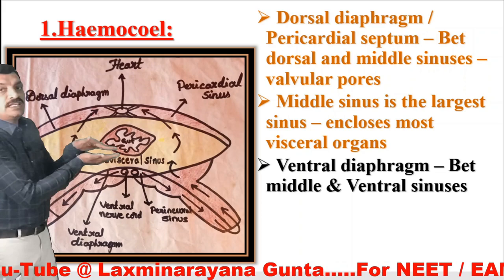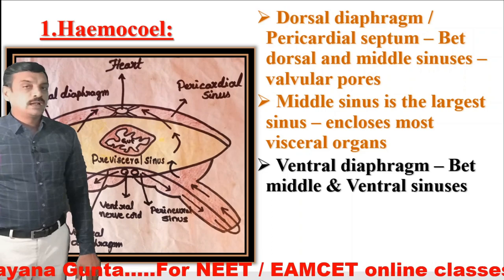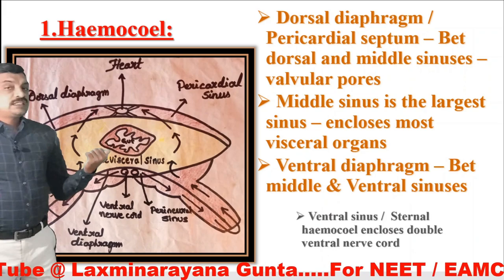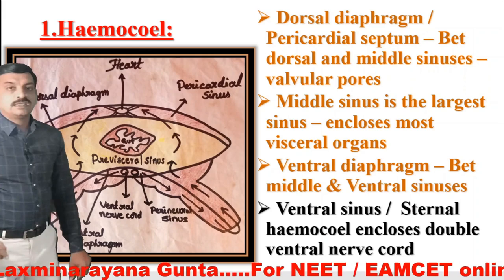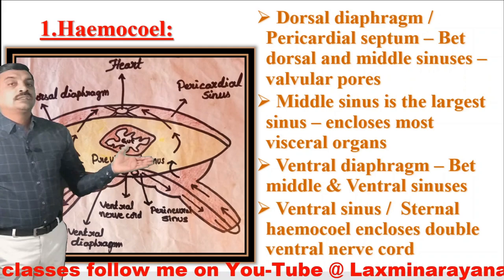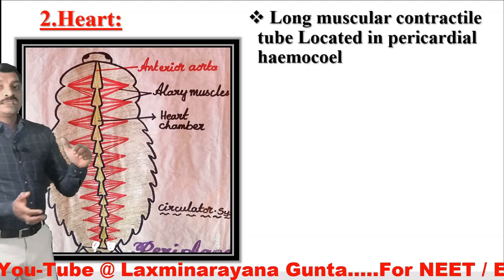The ventral septum is present between the ventral sinus and the middle sinus. It also has valvular pores which prevent the backflow of blood or hemolymph. The ventral sinus or sternal hemocoel encloses the double ventral nerve cord — two small circles in the diagram indicate the double ventral nerve cord.